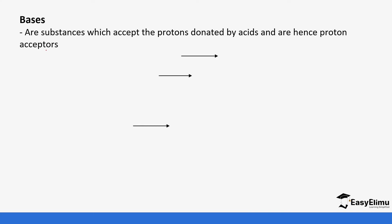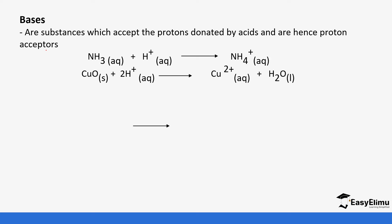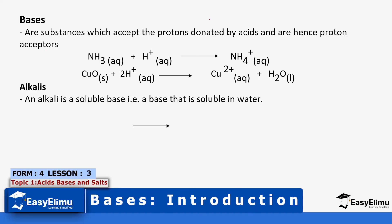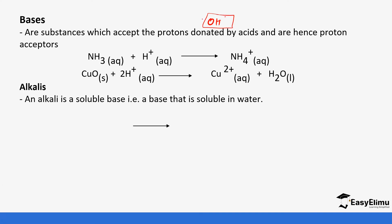Bases are usually called proton acceptors — that is the Brønsted theory. Proton acceptor means the proton ion given off by the acid is going to be accepted by the base. The Arrhenius definition of a base is a substance that loses or releases OH ions, or hydroxide ions. However, this definition had some weaknesses because it couldn't explain why ammonia was basic, since ammonia isn't giving off OH ions. That's where the Brønsted theory came in. Ammonia accepts a hydrogen ion from an acid to form ammonium ion. Another base is copper oxide — it gains a proton to form copper ions and water.